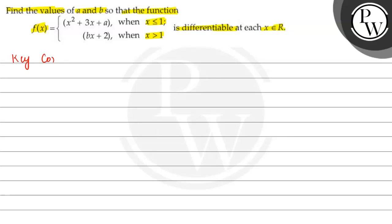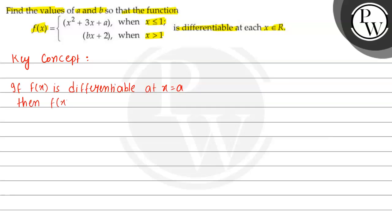The key concept to solve this question is: if f(x) is any function and is differentiable at x equal to a, then f(x) must be continuous at the same point, that is x equal to a. So if any function is differentiable at a particular point, we automatically have to consider that the given function is also continuous at that point.